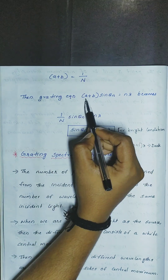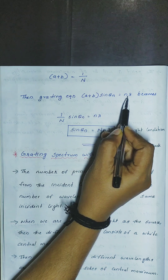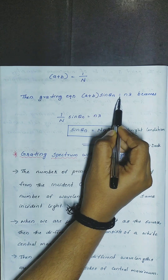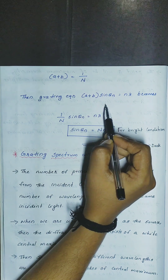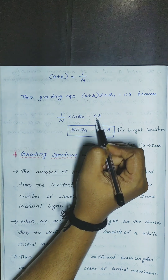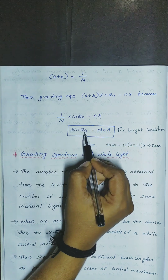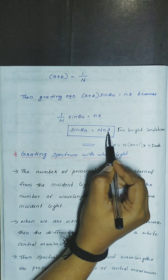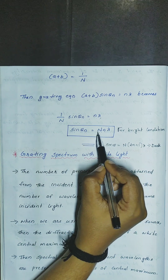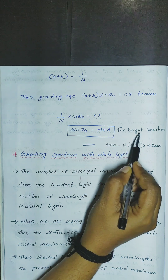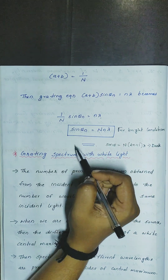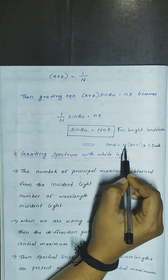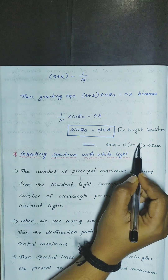The equation is written as A plus B sin theta n is equal to n lambda. Then 1 by N into sin theta n is equal to n lambda, giving sin theta n equal to N n lambda for the bright condition. For dark fringes, sin theta is equal to N into (2n+1) into lambda.